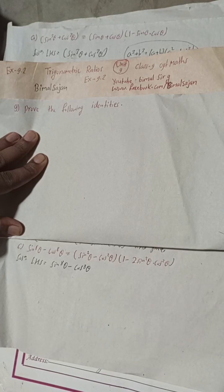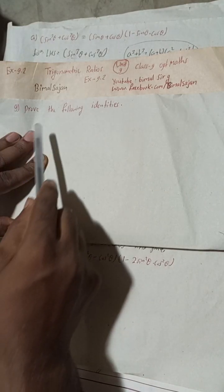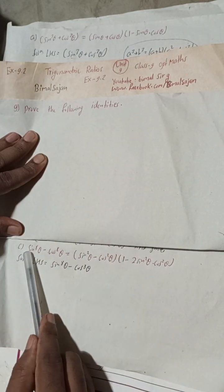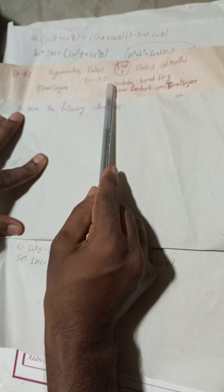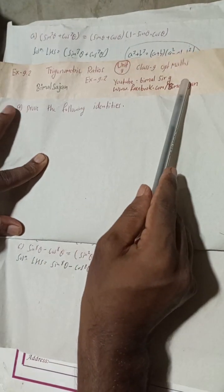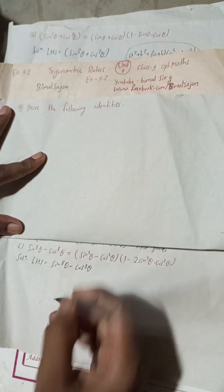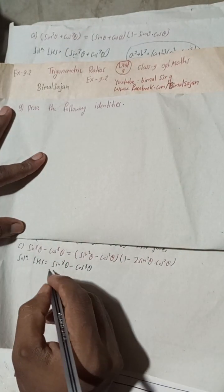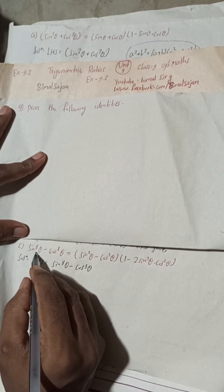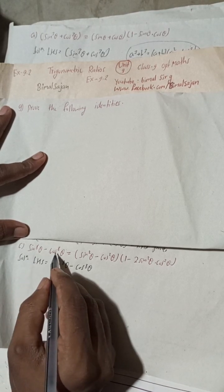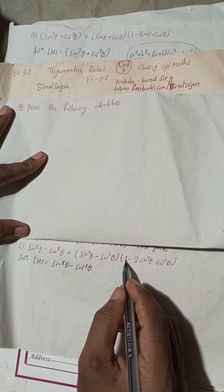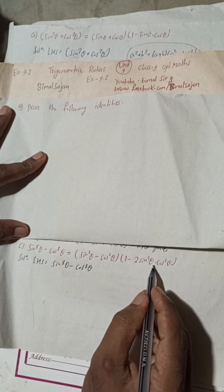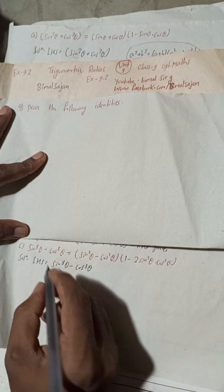Hi everybody, welcome back to Bimal Sarji's YouTube channel. This is question number 9C, Exercise 9.2, Trigonometric Ratios, Class 9 Optional Mathematics. The question is: sin to the power 8 theta minus cos to the power 8 theta is equal to (sin²θ - cos²θ)(1 - 2sin²θ·cos²θ).